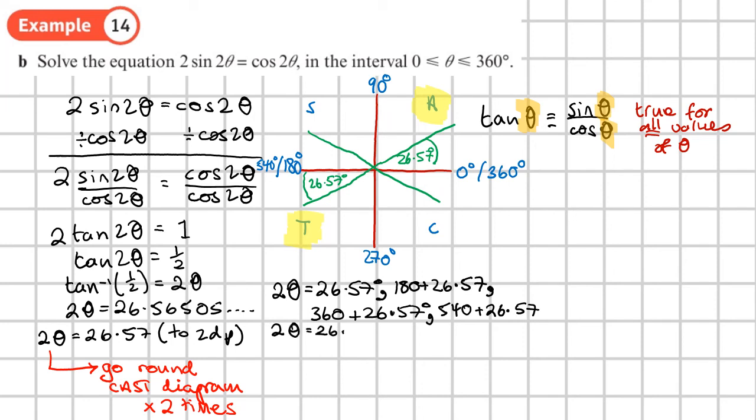26.57 is the first one. Then 180 plus 26.57, that becomes 206.57. The next one will be 360 plus 26.57. So that becomes 386.57. And then the last one is going to be that 540 plus 26.57. So that becomes 566.57.